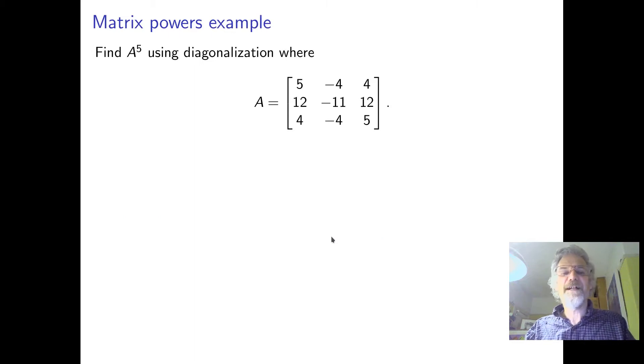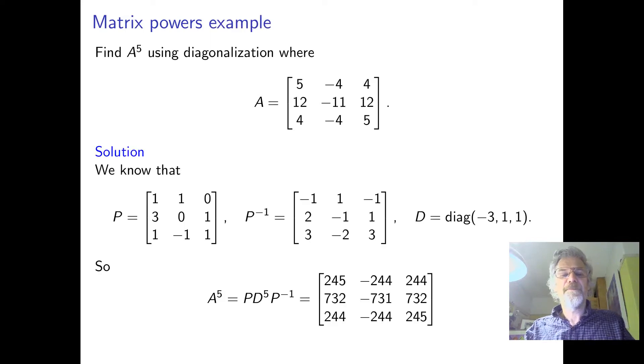So, suppose you want to work out A to the five. Okay, we could just do it on our calculator. But, we've diagonalized this one before. So, P is that, P^(-1) is that. The diagonal matrix is diag(-3, 1, 1). Notice that it was a repeated diagonal. So, to work out D to the five, we just raise this to the power of five. So, minus three to the power of five. The ones don't change. And it's kind of an interesting point about eigenvalues that are one.